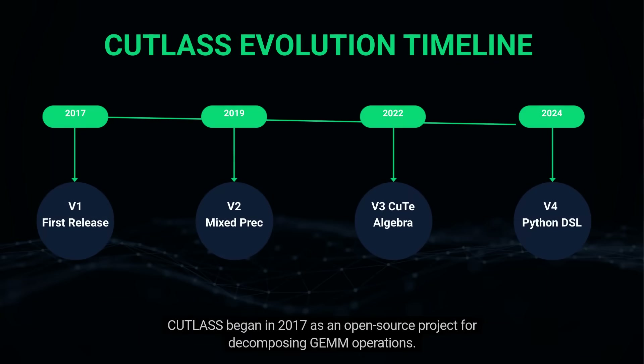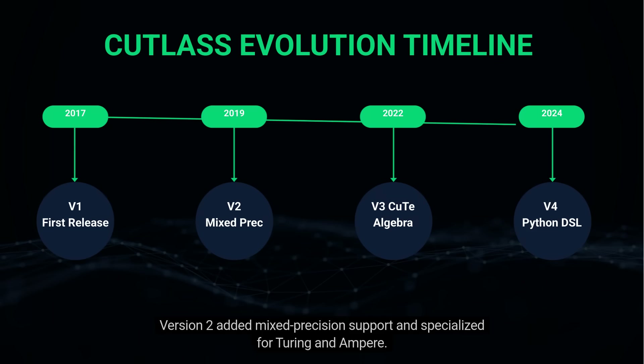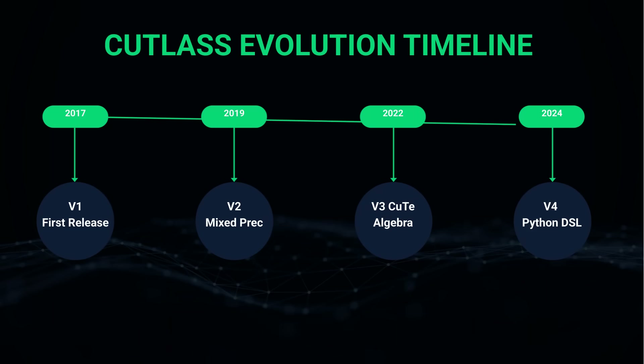Cutlass began in 2017 as an open-source project for decomposing GEMM operations. Version 2 added mixed precision support and specialized for Turing and Ampere. Version 3 in 2022 introduced the revolutionary CuTe abstraction layer.